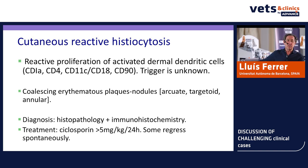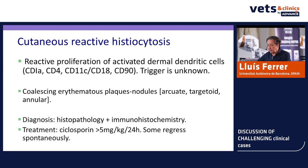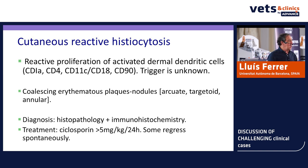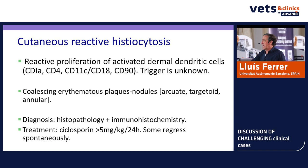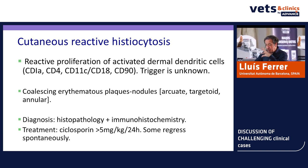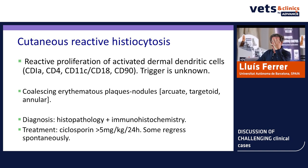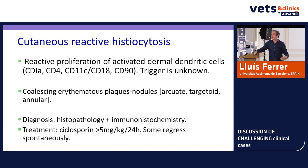Reactive histiocytosis is a proliferation of activated dermal dendritic cells — a population in the dermis that plays an important role presenting antigens. They are CD1a positive, CD4 positive, CD11c/18 positive. We don't know why these cells become activated suddenly in some dogs, but we see these dogs developing plaques, usually erythematous, some ulcerated, on the face — typically on the nose or on the dorsum. Diagnosis is easy via histopathology or immunohistochemistry.